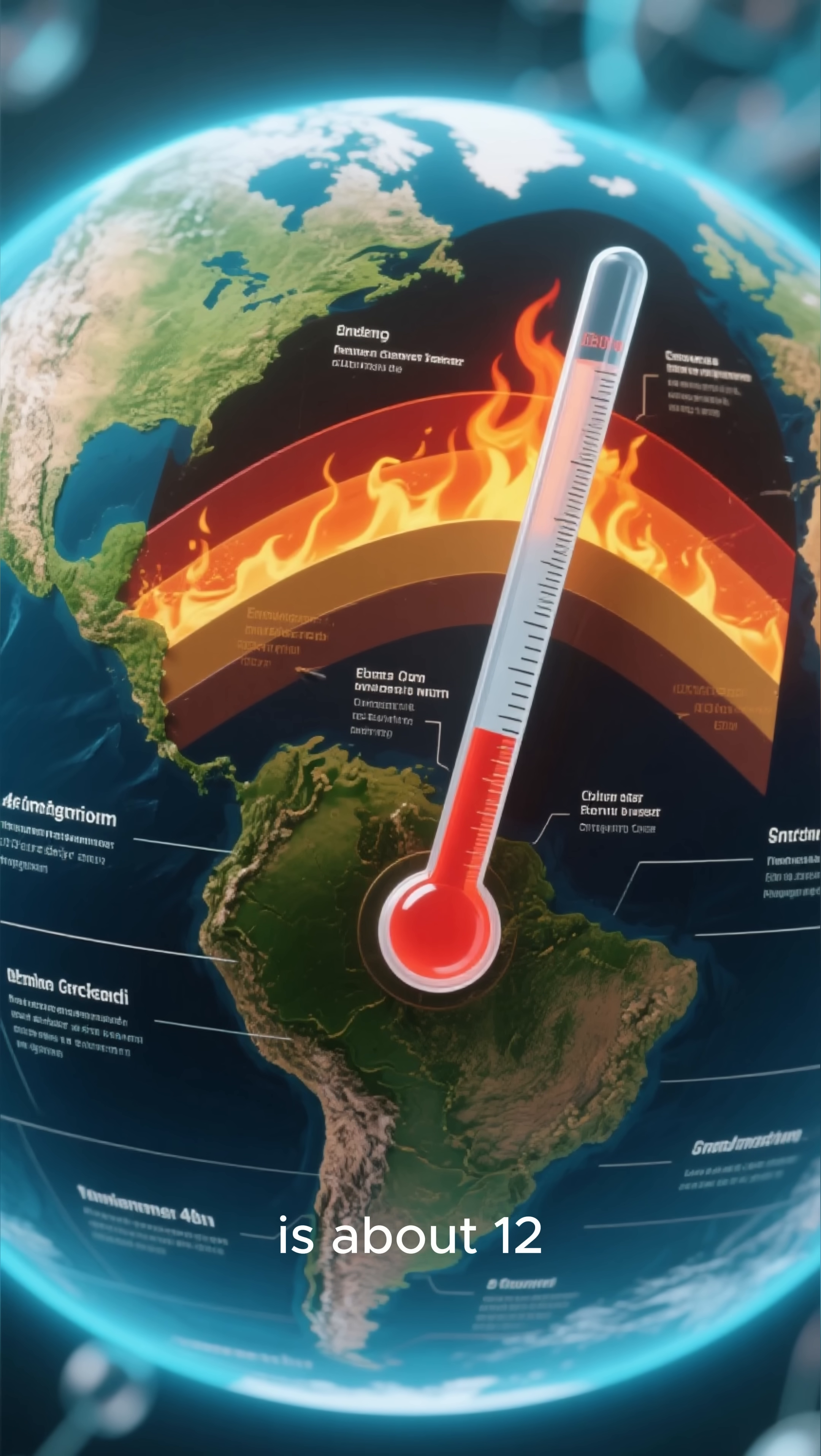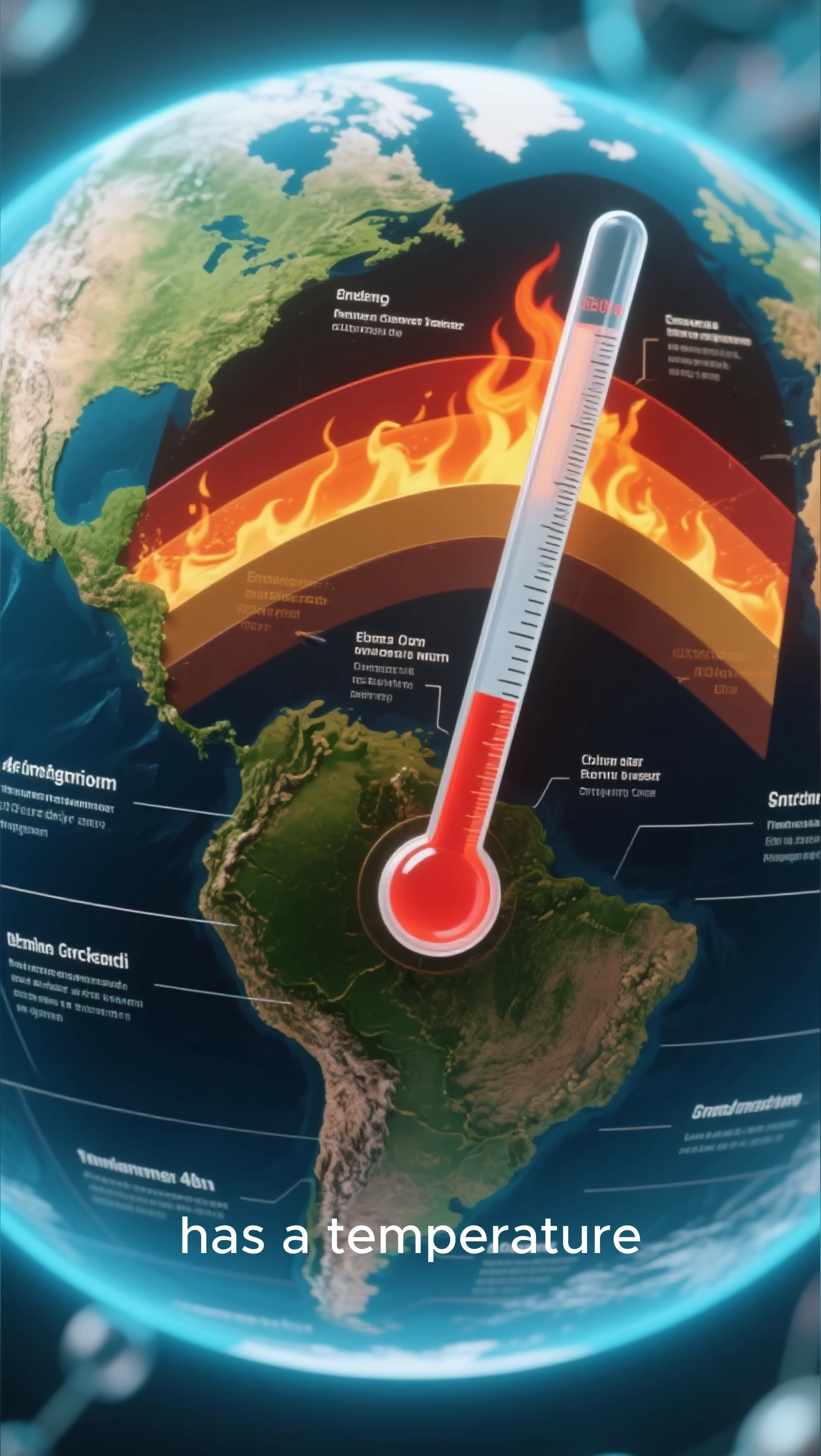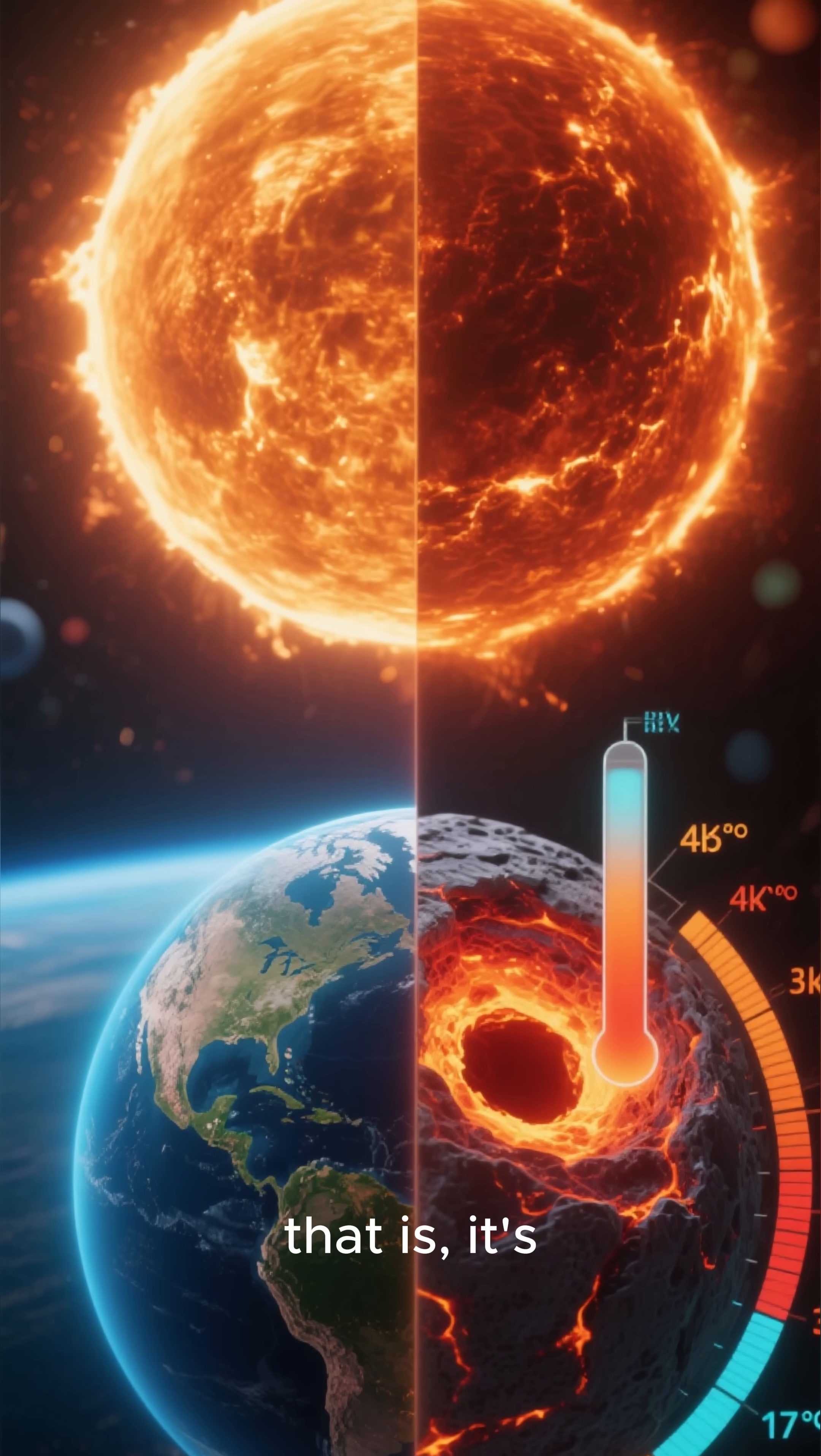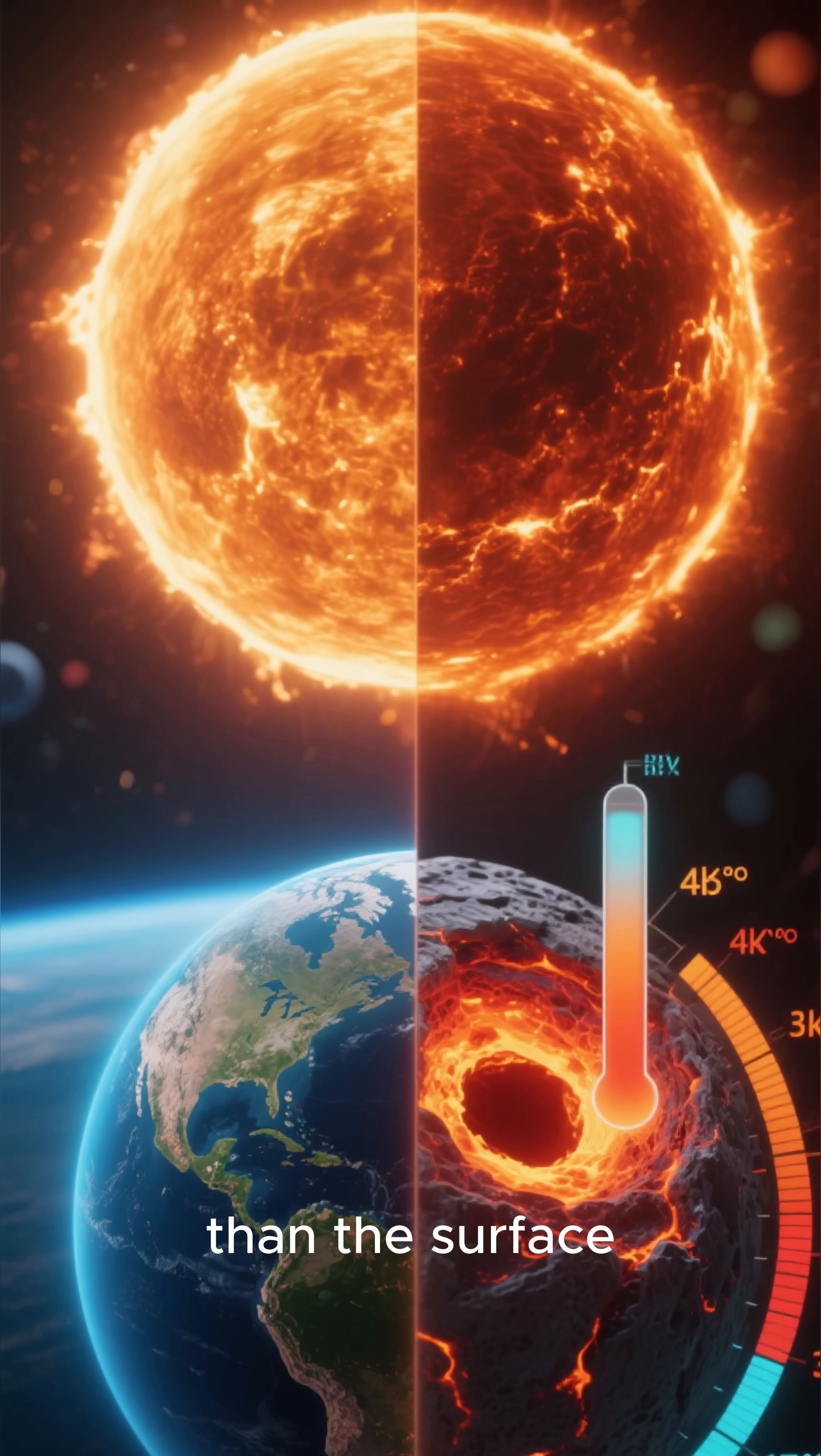The Earth's core is about 12 kilometers under the surface and has a temperature of over 5,000 degrees Celsius. To give you an idea of how hot that is, it's around 1,800 degrees hotter than the surface of the sun.